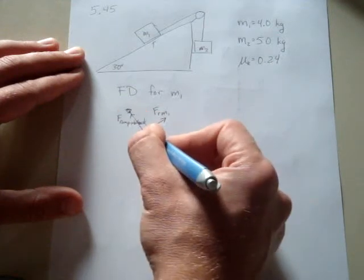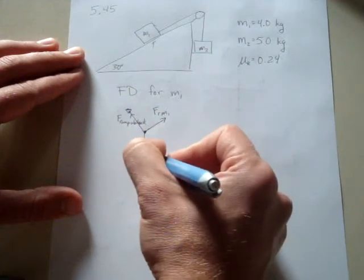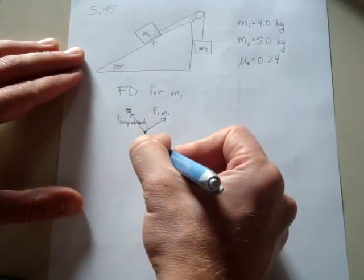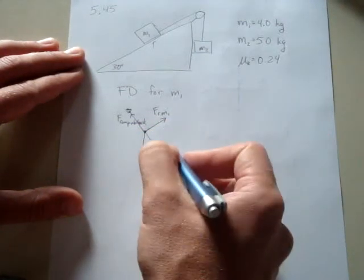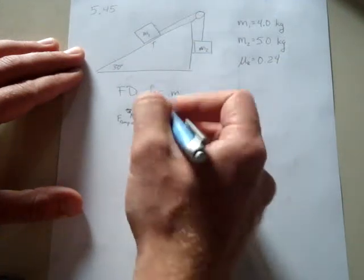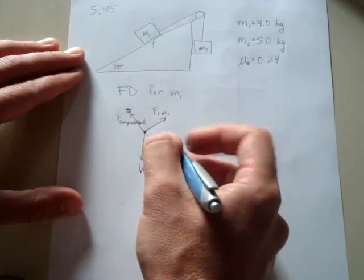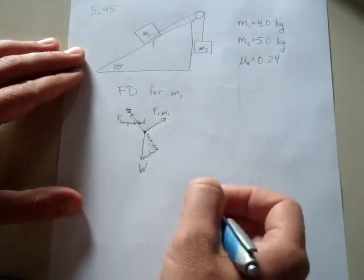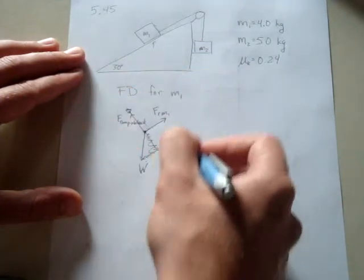So we know that there's two components to this weight force that is along these two different directions here. So we know the angle here. I should be more careful. This is my force diagram. I do know something about this weight, right? So the force diagram for M1 just looks like this.